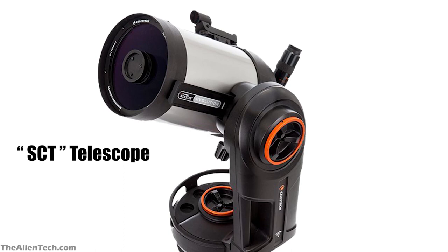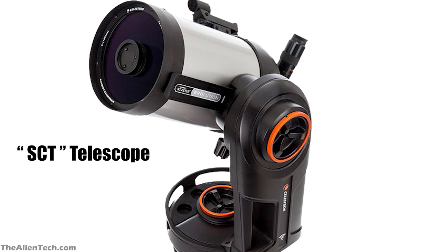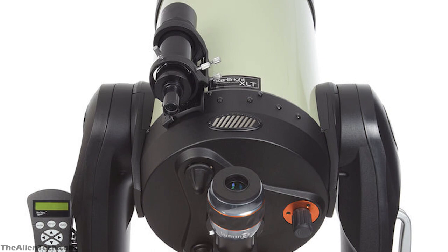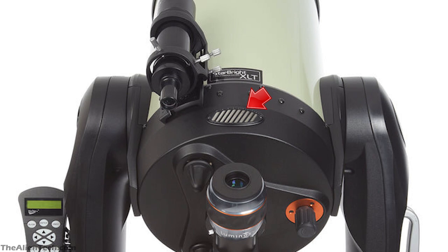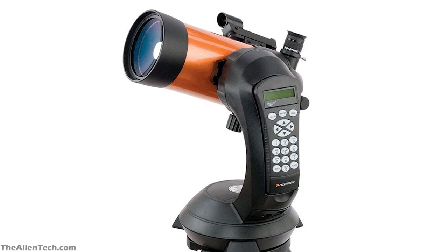SCTs have closed tubes, so hot air can get trapped inside the tube over a long time, affecting the views from the telescope. This is a problem with big aperture SCT telescopes, usually above 11 inches. That is why big aperture SCT telescopes have a cooling vent behind the primary mirror which lets out warm air without letting dust in. Because of the thick corrector plates on the MAC, its light gathering is very slow, which is not ideal for astrophotography — so usually MAC telescopes are not the preferred choice for astrophotography.